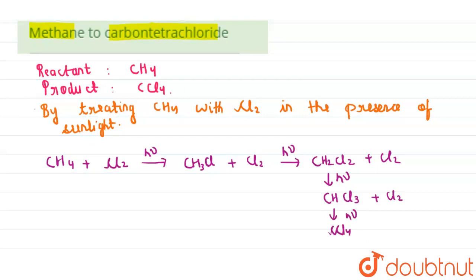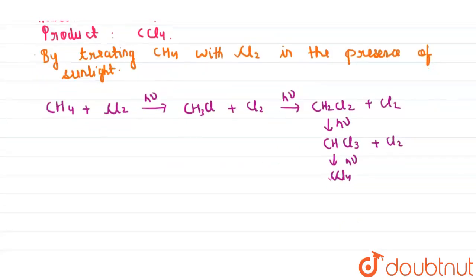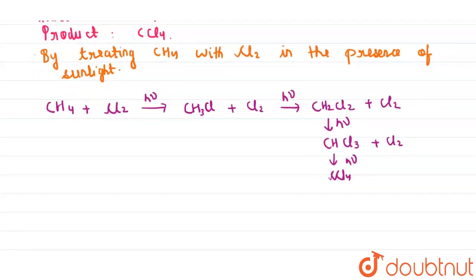By this way we can say that the required reaction is CH4 when react with 4 moles of Cl2 in the presence of light it will form CCl4.